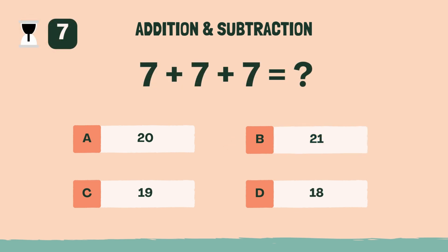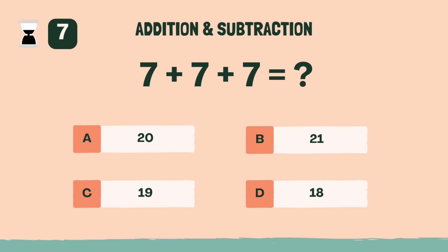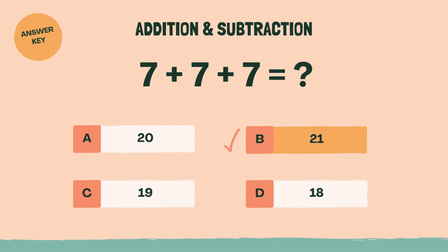What is the total of 7 plus 7 plus 7? The answer is B, 21.